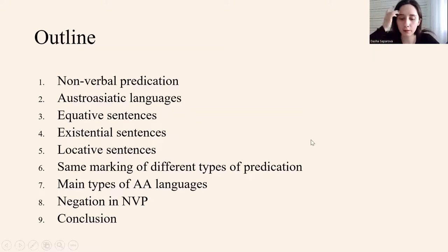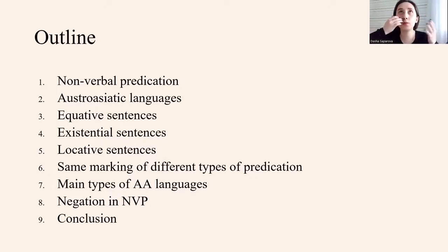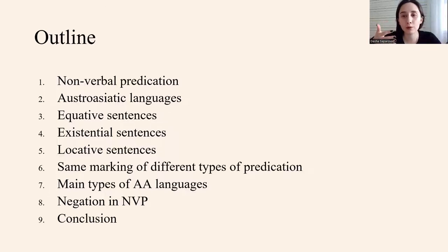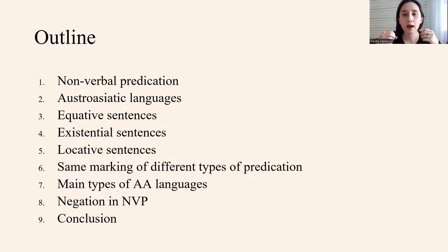Here is an outline of my presentation. First, I will speak about theory of nonverbal communication, then I will give a brief introduction and classification of Austroasiatic languages. Then I will separately consider equative sentences, existential and locative ones, then the same marking of different types of predications. After that I will give a typology of main types of Austroasiatic languages based on how they mark the different types of nonverbal predicates. At the end, I will consider negation in nonverbal predication and then give some conclusions.